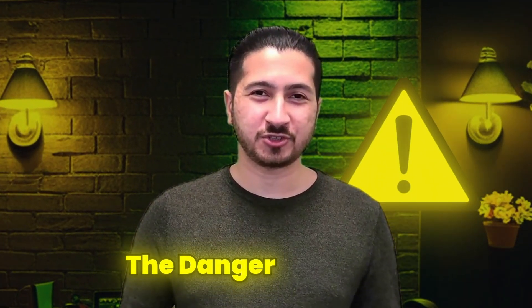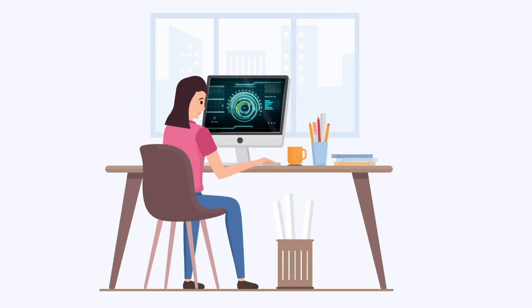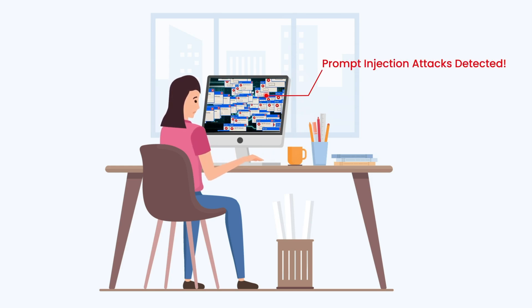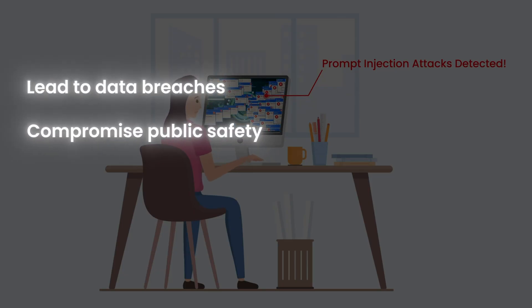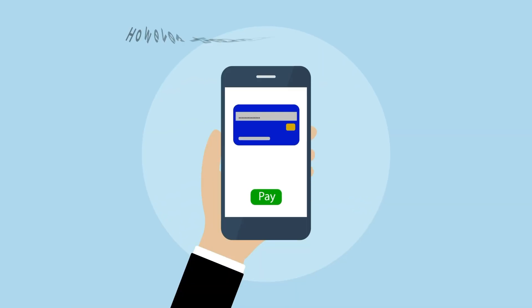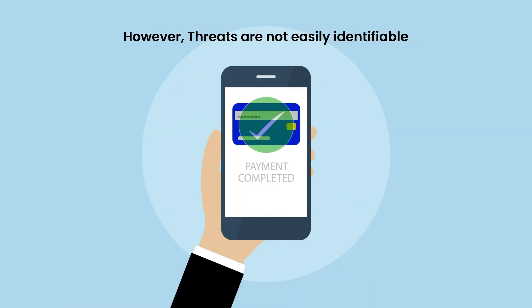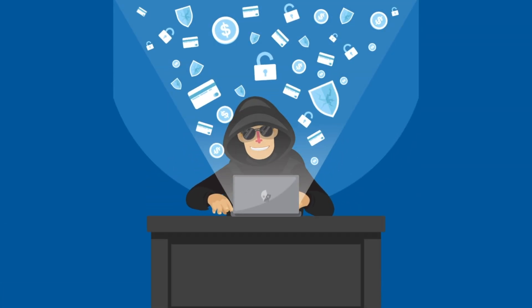And then there's the danger of scaling. One compromised AI system might not seem like a big deal, but many industries are adopting these tools rapidly — from healthcare to finance. Prompt injection attacks could disrupt critical operations, lead to data breaches, or even compromise public safety. In short, these attacks don't just pose a technical challenge; they have real consequences in the world around us, exposing vulnerabilities in systems we rely on every day and reminding us that even the smartest AI can still be fooled.